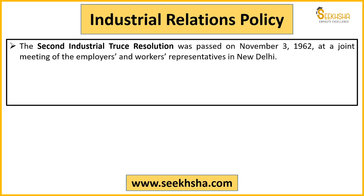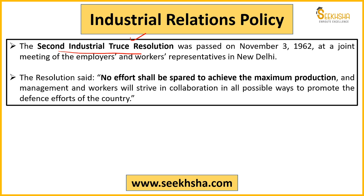In 1962, there was a Second Industrial Truce Resolution signed in New Delhi. It talked about maximizing production and bringing management and workers together to collaborate — promoting this collaboration in every possible way.